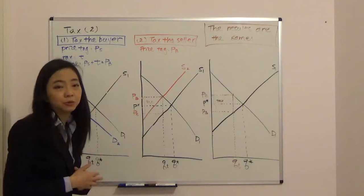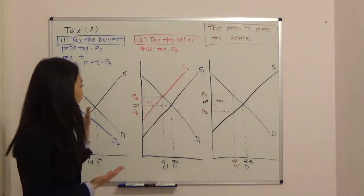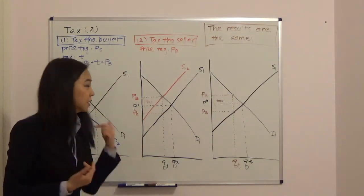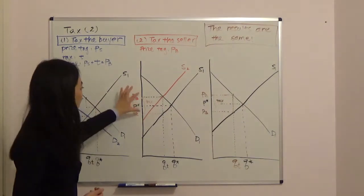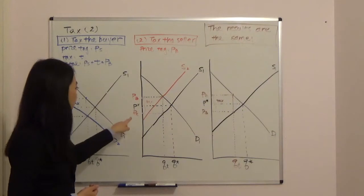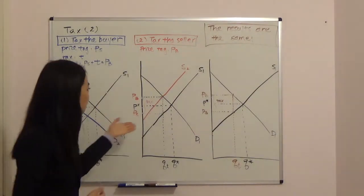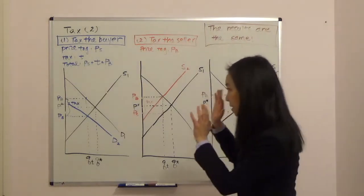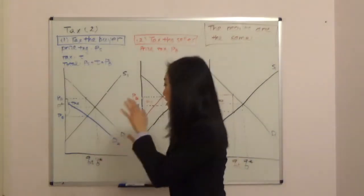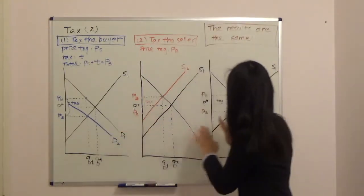So you can see the results are exactly the same. As a consumer, after tax, you pay a price PB and then the government collect tax T dollars and the seller goes home with PS. So you don't have to shift supply or demand curve because it doesn't matter whether the government tax the buyer or the seller.